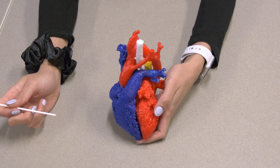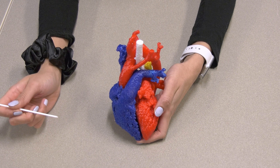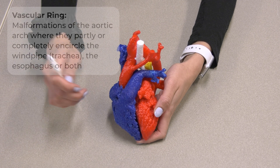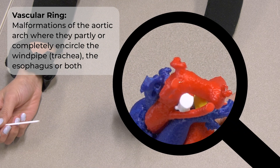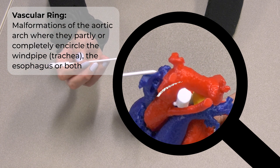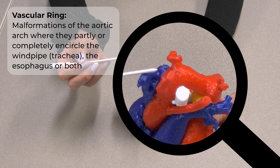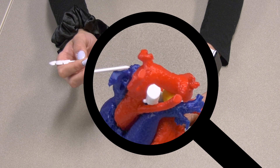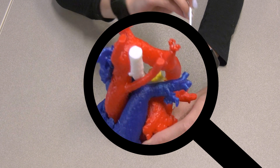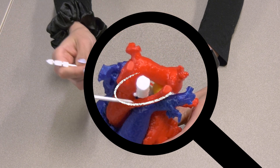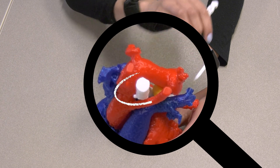Now let's review the main problem that patients face with this type of heart. The main issue is the formation of what we call a vascular ring. A vascular ring is when the abnormal heart development results in blood vessels surrounding and compressing, or squeezing, some other structures. In this case, this abnormal heart development is causing the trachea and the esophagus to be compressed by a ring of blood vessels and other structures.